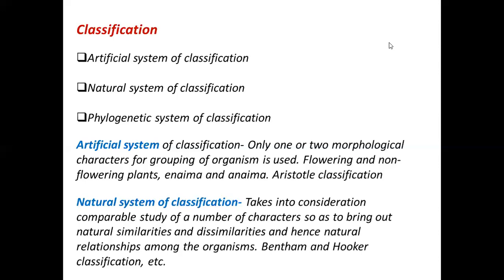This classification was given by Aristotle. Aristotle divided organisms into two categories: one with red blood cells and one without red blood cells. He also divided them on the basis of their habitat — aquatic animals and terrestrial animals. This is the artificial system of classification.